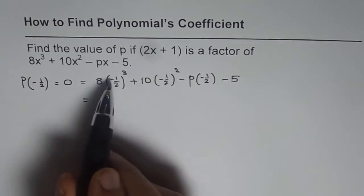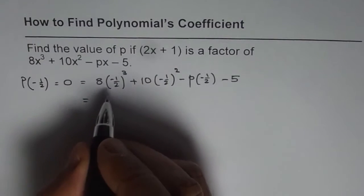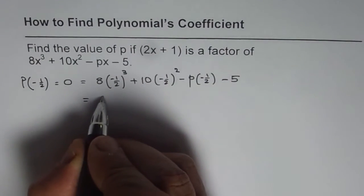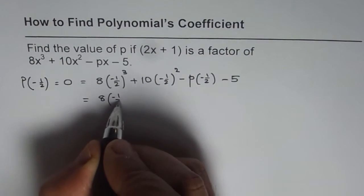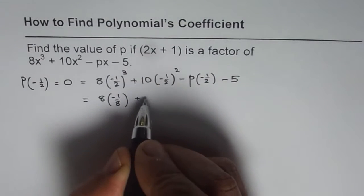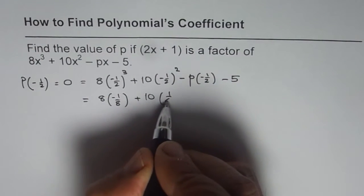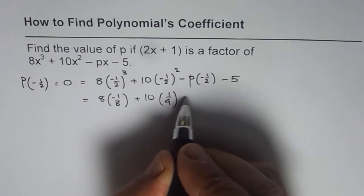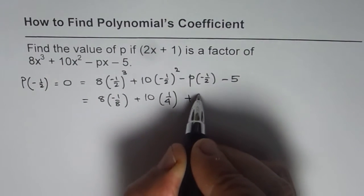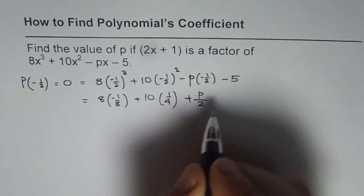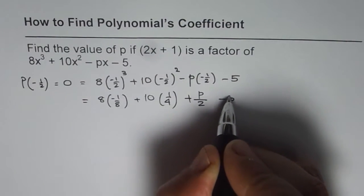That gives me minus half cube is minus 1 over 8. So let me write this as minus 1 over 8 plus this would be 10 times 1 over 4. Square minus minus becomes positive, so this is p over 2. And here we have minus 5.